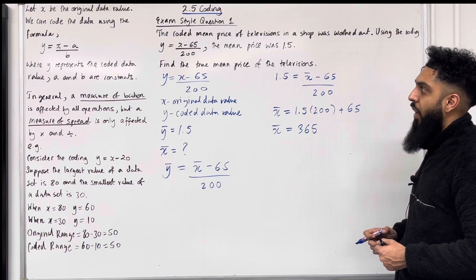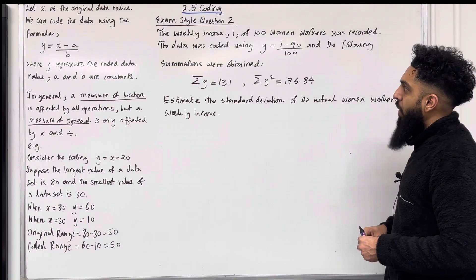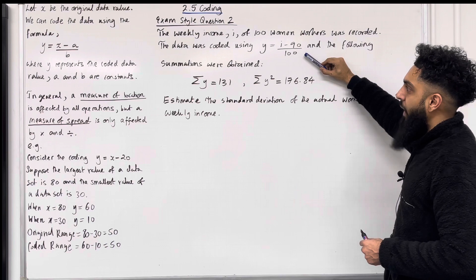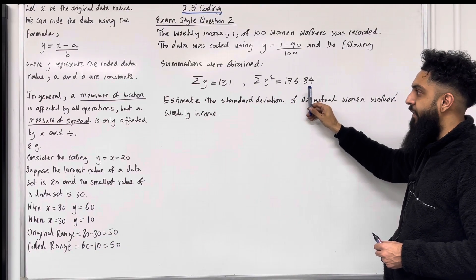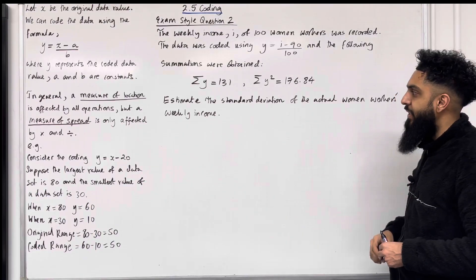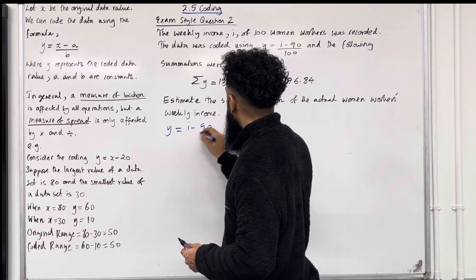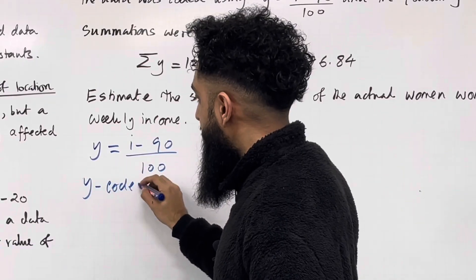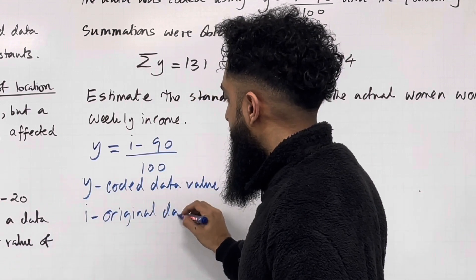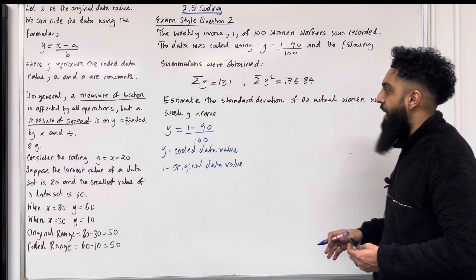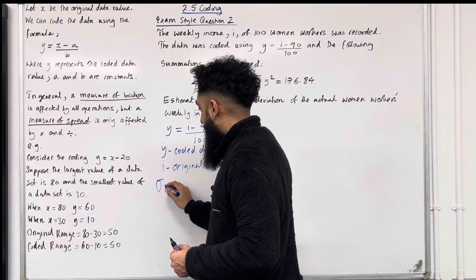This completes exam style question 1. Here is exam style question 2. The weekly income i of 100 women workers was recorded. The data was coded using y equals i minus 90 over 100, and the following summations were obtained: sum of y equals 131, sum of y squared equals 176.84. Estimate the standard deviation of the actual women workers' weekly income. We are trying to work out sigma i.